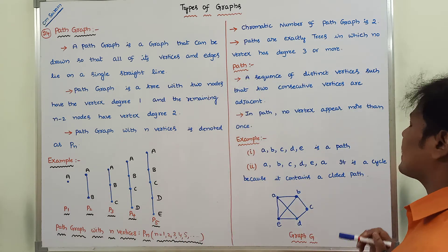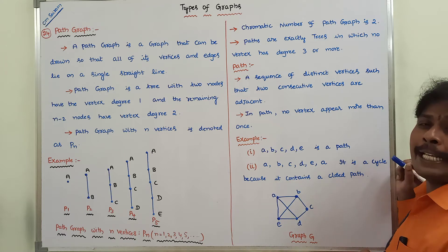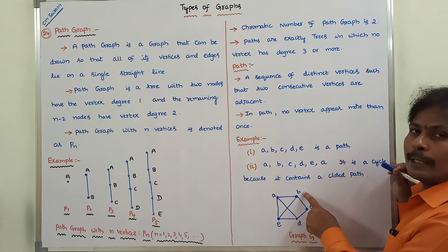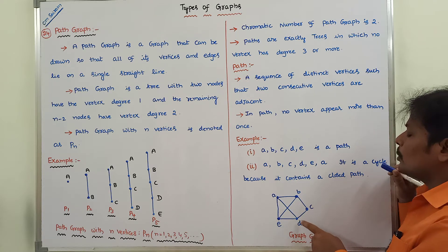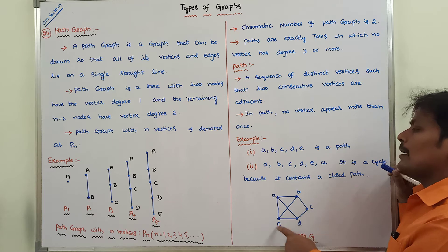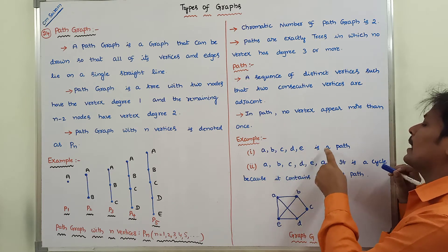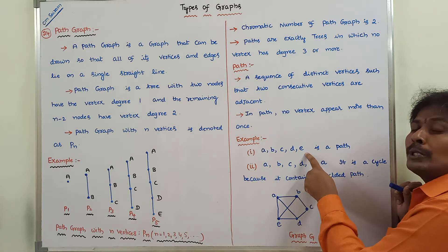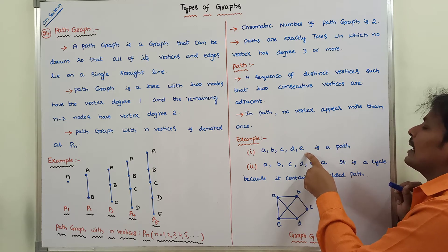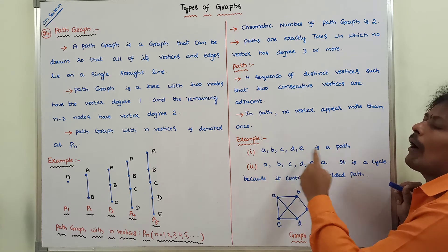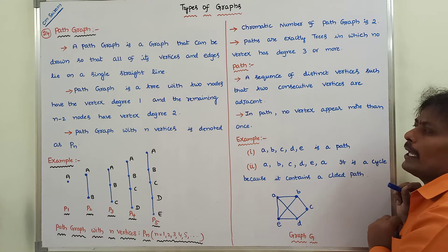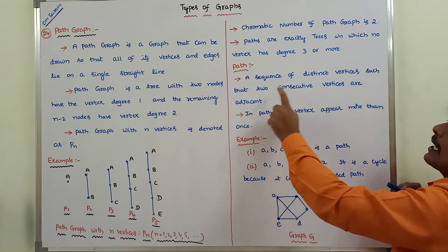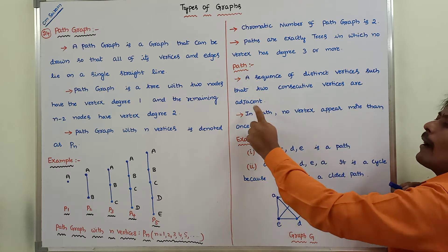See this example. In this graph, starting from vertex A, go to vertex B, go to vertex C, go to vertex D, and go to vertex E. So A, B, C, D, E is a path. Starting vertex and ending vertex should not be the same, so it is also called an open path.